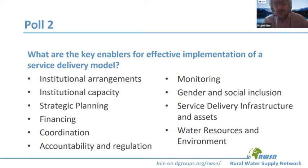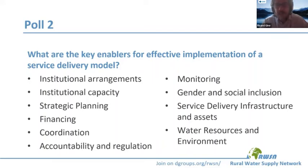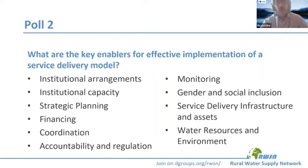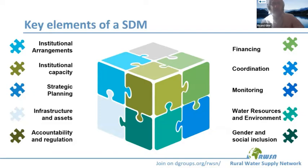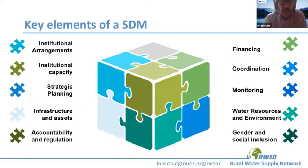It's important to see that there are different elements, and some are more relevant to specific contexts than others. With no right or wrong answer, the key point is that in order to support and strengthen effective delivery of a service delivery modality, we need different elements — some at the local level and some at the enabling environment level. We need to have clarity on roles and responsibilities of all stakeholders involved in service delivery.